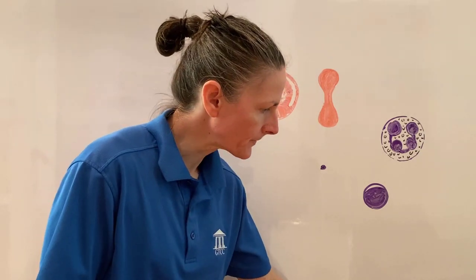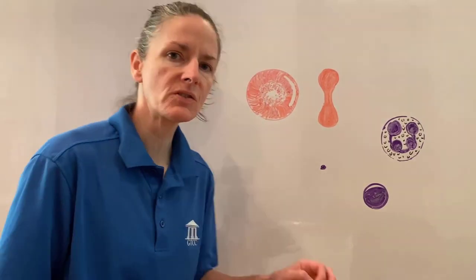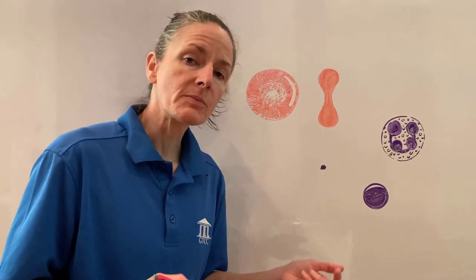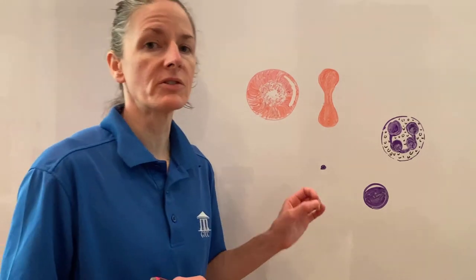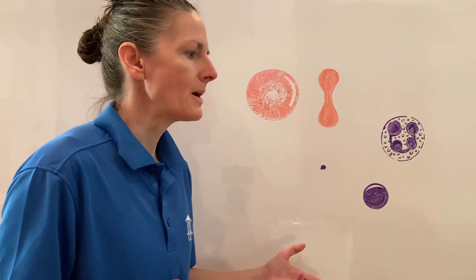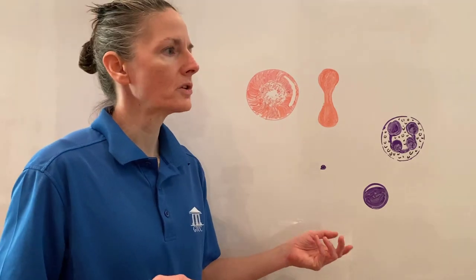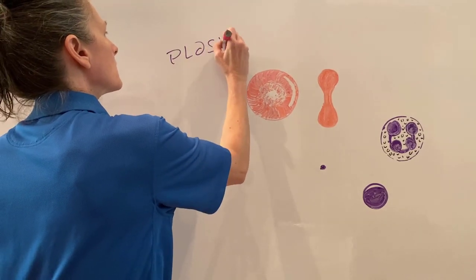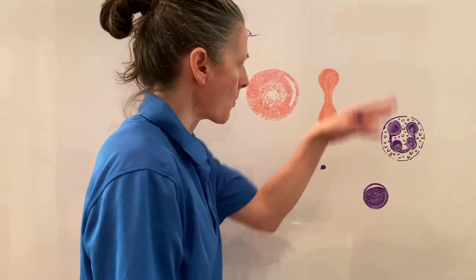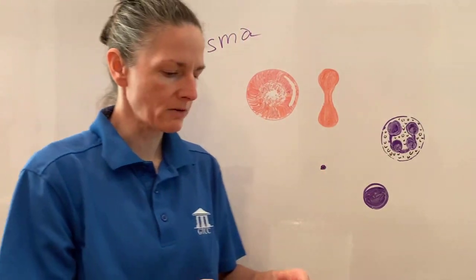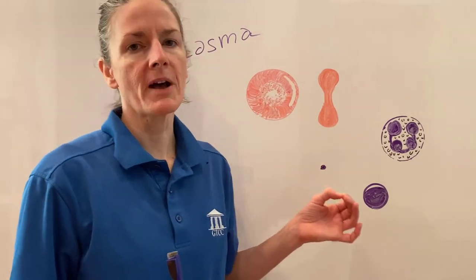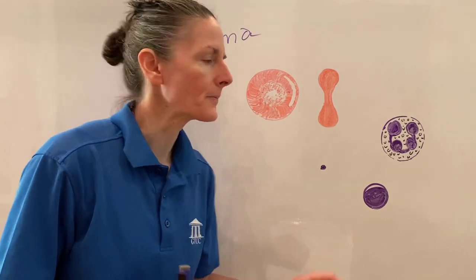Plasma is the matrix of blood, and it has dissolved within it proteins called plasma proteins. These are globular proteins that are soluble, and there are many different types. The plasma is all of the white space if you look at a microscope slide of blood — it surrounds the cells. You can't see the dissolved plasma proteins, but they are there.